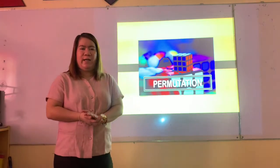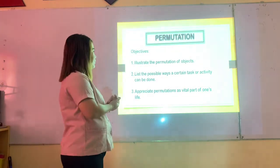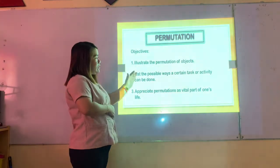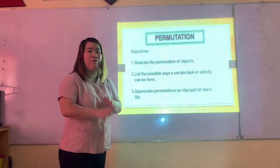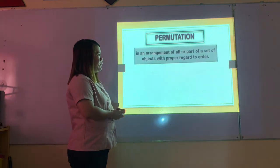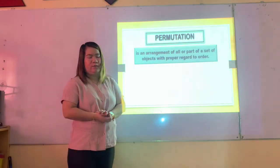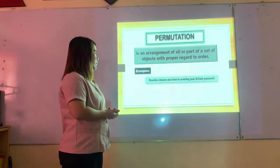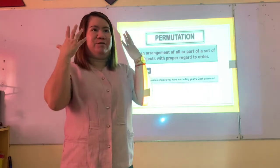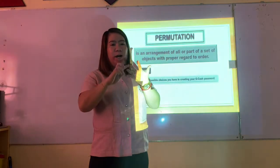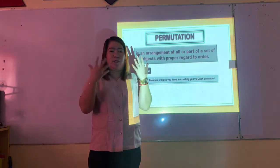Our example a while ago is an example of permutation. Permutation is an arrangement of all or part of a set of objects with proper regard to order. The objectives are: use permutation of objects, list possible ways a task can be done, and appreciate permutation as a vital part of one's life. An example is the possible choices in creating your GCash password — you have 10 numbers (0–9) and many possible arrangements.